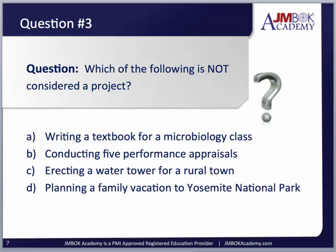The options are: A, writing a textbook for a microbiology class; B, conducting five performance appraisals; C, erecting a water tower for a rural town; or D, planning a family vacation to Yosemite National Park. Writing a textbook has a project written all over it. Erecting a water tower sounds like a project. Planning a family vacation — if you have kids, that definitely sounds like a project.